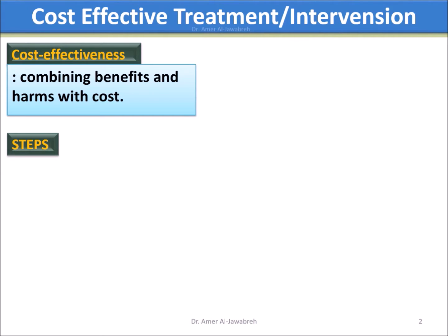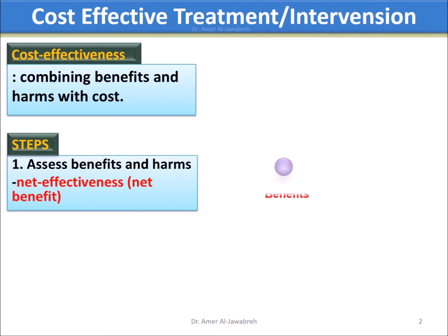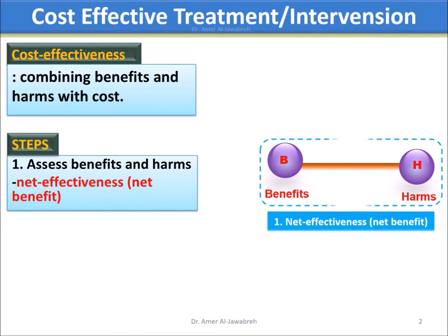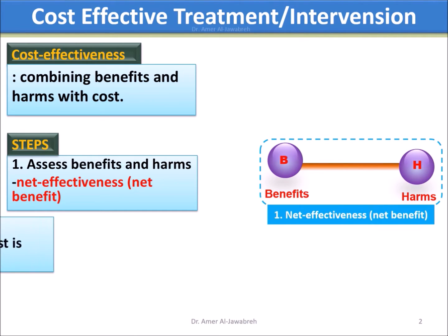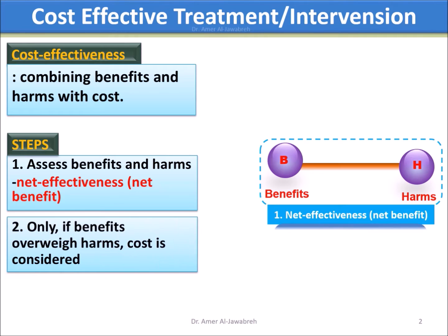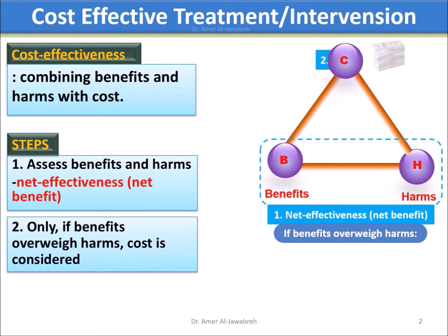Steps: First, assess benefits and harms — net effectiveness or net benefit. Second, only if benefits outweigh harms is cost considered.